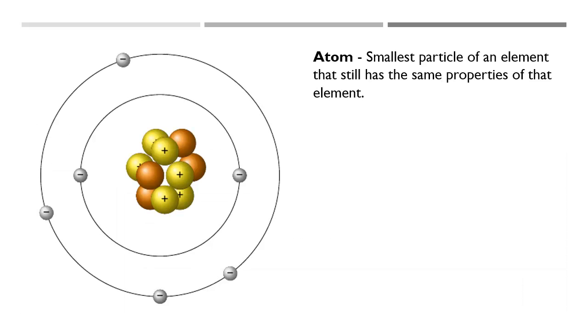In this lesson, we're going to be going over atomic structure, so we'll be looking at all the little pieces that make up an atom. These are called subatomic particles. But first, here's the definition of an atom. It's the smallest particle of an element that still has the same properties of that element.